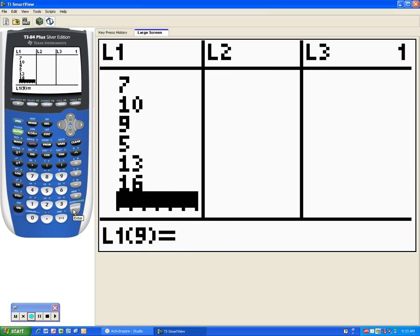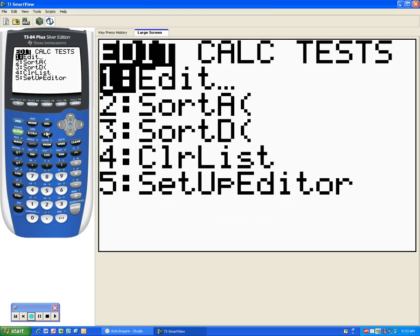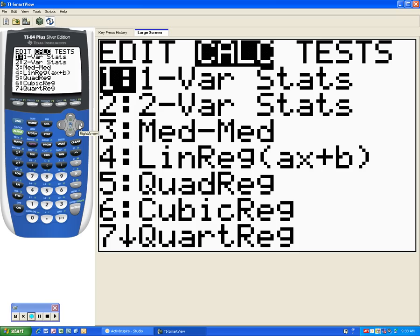Okay, after we do that we're gonna go ahead and have the calculator find the five number summary for us. So the next thing you need to do is hit your STAT button again. This time you need to go over to CALCULATE, so right arrow over to CALCULATE. Now number one says one variable stats, that's what we want to pick. So just go ahead and pick number one.